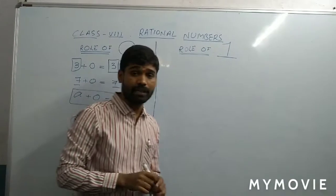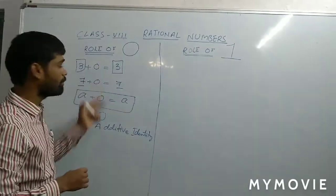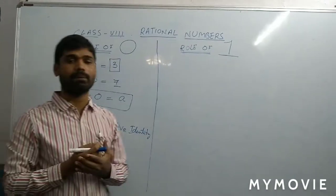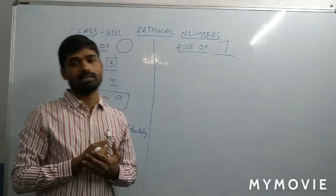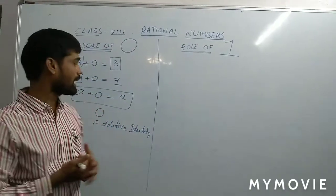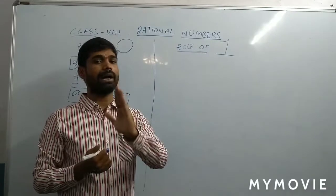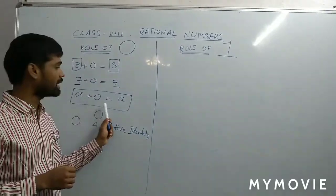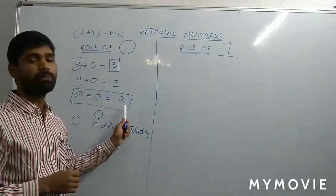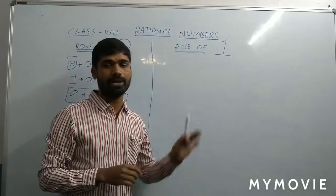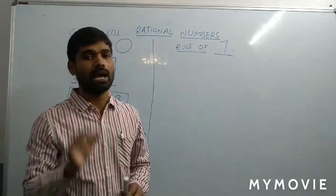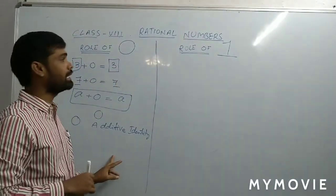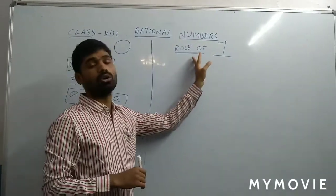Why additive identity? Just now we have seen a few examples. When 0 is added to any rational number, the answer is the same rational number — there is no change in the sum. That's why 0 is called as additive identity. So, A plus 0 is equal to A, we get the same answer. The role of 0 means 0 is nothing but the additive identity.